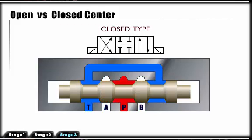This closed-type configuration blocks P, T, A, and B in neutral, giving us a closed center. This center type is common in parallel circuits where we want to stop and hold a load in mid-cycle.